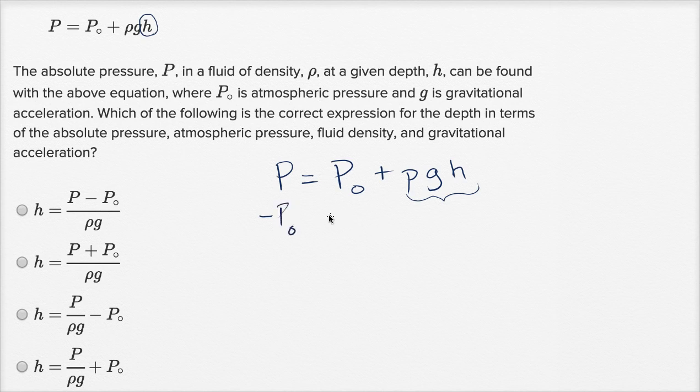So subtract P sub zero, subtract P sub zero, and then on the left hand side I have capital P minus capital P sub zero is equal to—those are going to cancel out—rho times g times h.